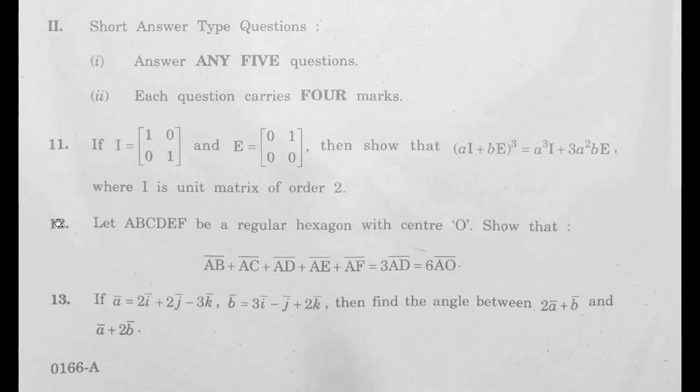The second SAQ is from chapter 4 addition of vectors, the third SAQ is from chapter 5 product of vectors, and the fourth SAQ is from chapter 6 trigonometry.